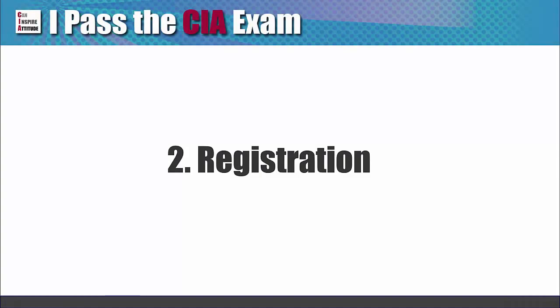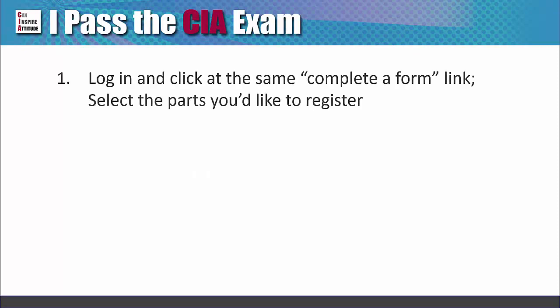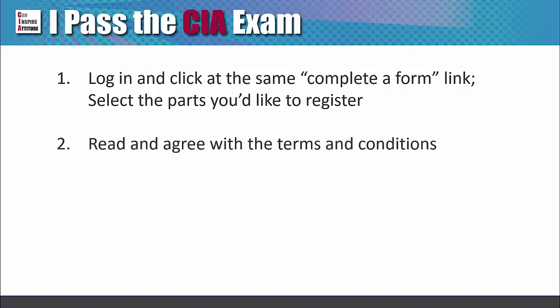CIA Exam Registration: You have now formally applied for the CIA program. Whenever you are ready, you can register for each exam part. Step 1: Log in and click on the same Complete a Form link you used for the application, then select the parts you would like to register. Step 2: Read and agree to the price provision and conditions. Step 3: Your registration fee will then be calculated.